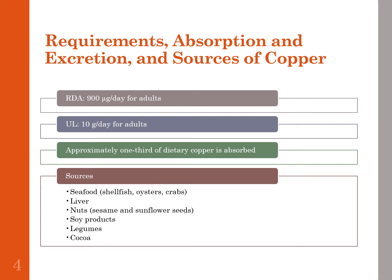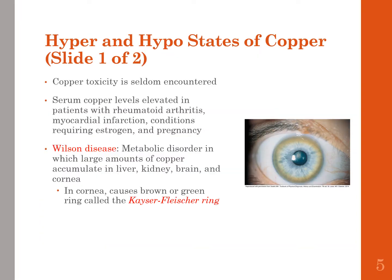So someone who is more acidic will absorb more copper, and someone with more calcium and zinc in their diet will absorb less. Sources of copper include seafood such as shellfish, oysters, and crabs; liver; nuts like sesame and sunflower seeds; soy products; legumes; and cocoa. Copper toxicity is very rare because the body only absorbs what it needs and can excrete the rest.